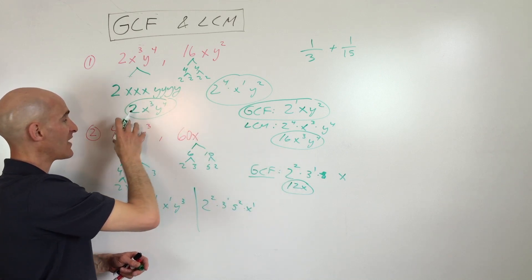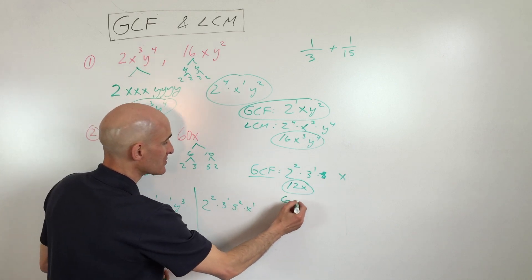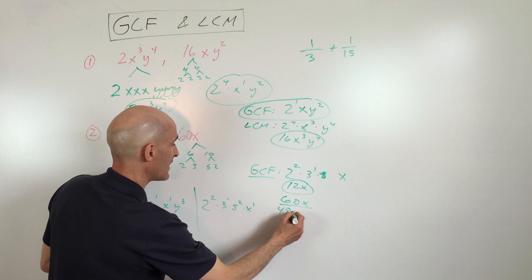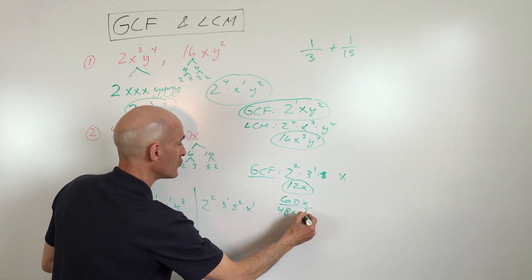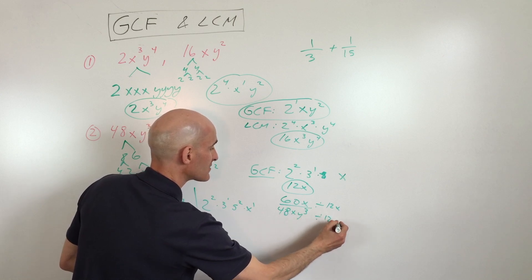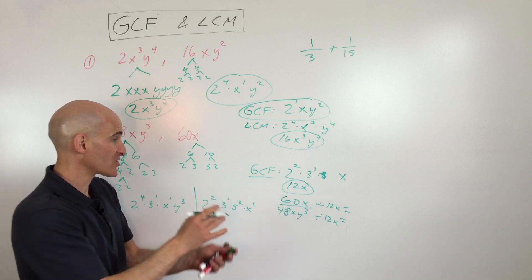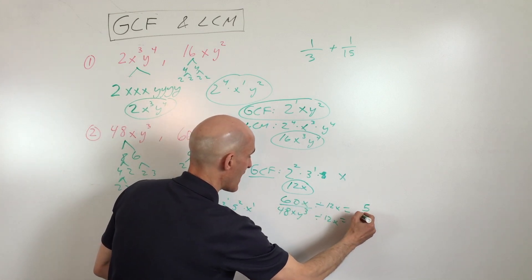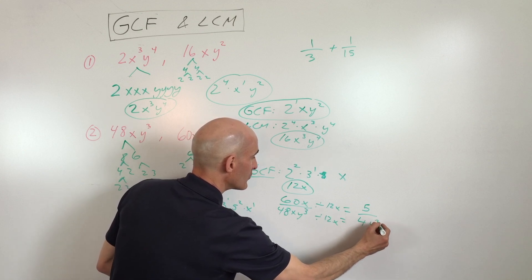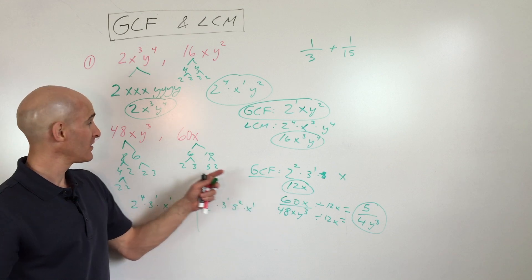And 12x will divide into, is the largest thing that will also divide into 48xy³. So if you were trying to reduce 60x divided by 48xy³, if you divided the numerator and the denominator by 12x, this will allow you to reduce the fraction to lowest term. So this would give you 5, this is going to give you 4y³. So now it's reduced. So that's the largest quantity that goes into both of these.